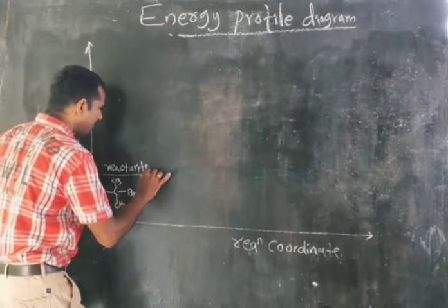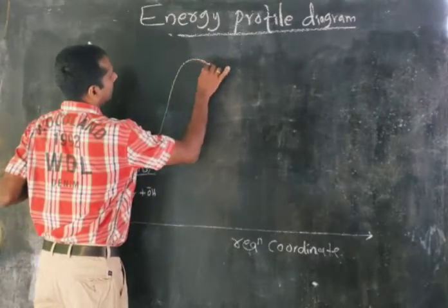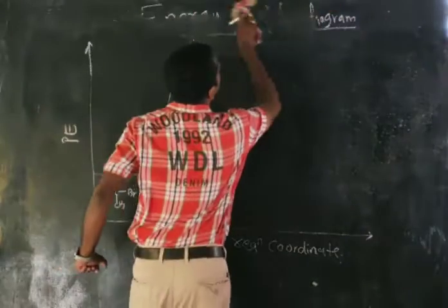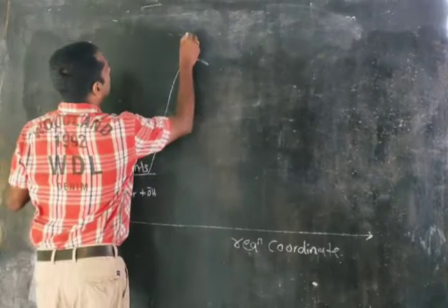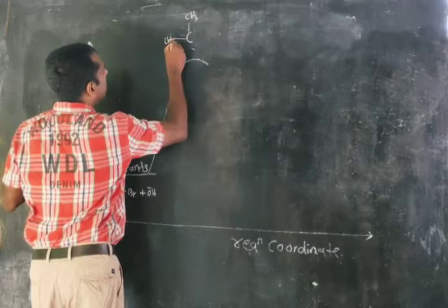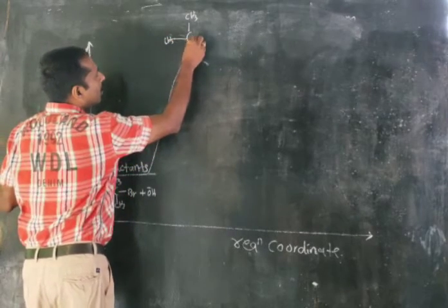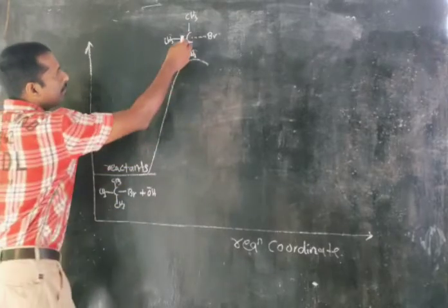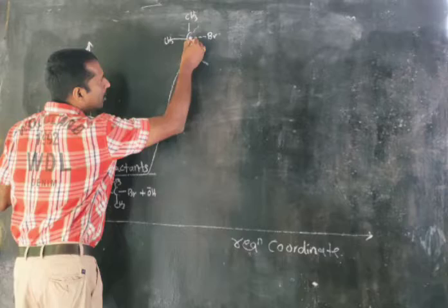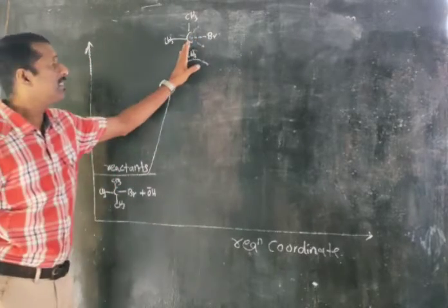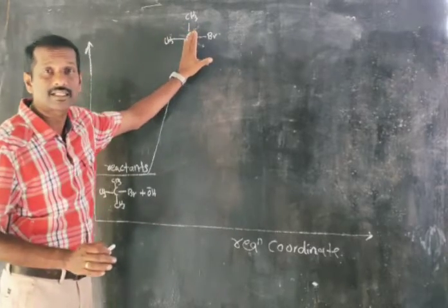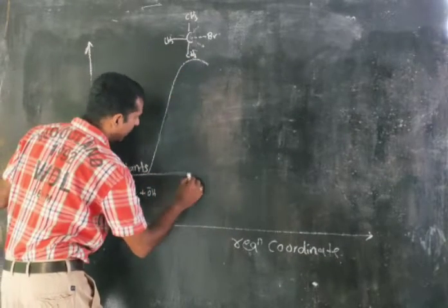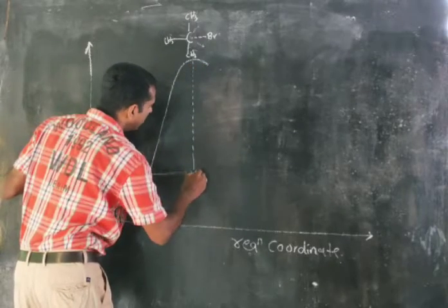In the first step, C(CH3)4 undergoes slow cleavage of the C–Br bond. The bond breaks heterolytically — the bond breaks from here, heterolytic cleavage. This is the first step. The energy required for this is called the first activation energy, EA1.